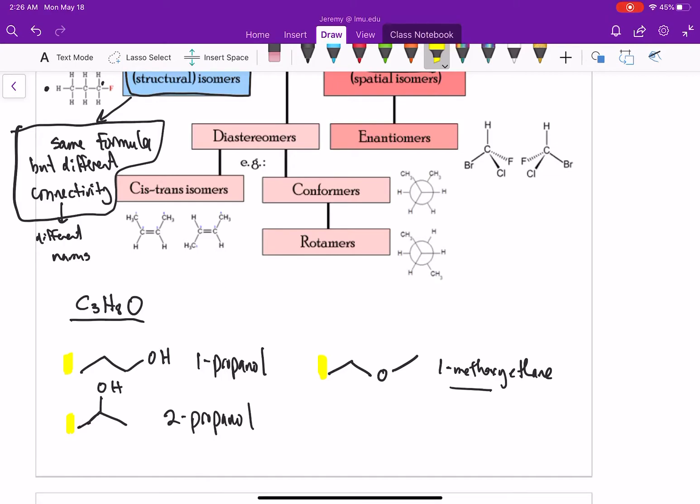But what I want to say is these three compounds here are basically all constitutional isomers. They have the exact same formula. But there's a different connectivity. Here the O is connected to carbon one, here it's connected to two, and here we have a completely different functional group. So those are structural isomers or constitutional isomers.